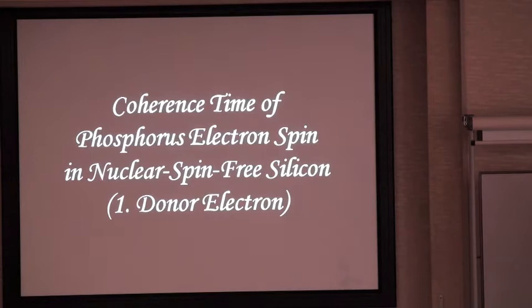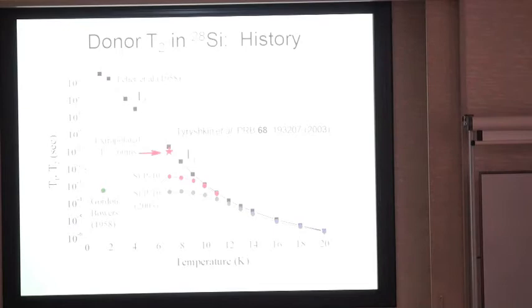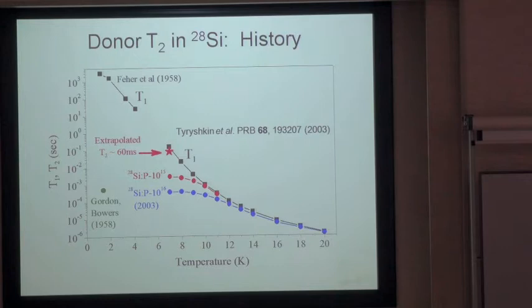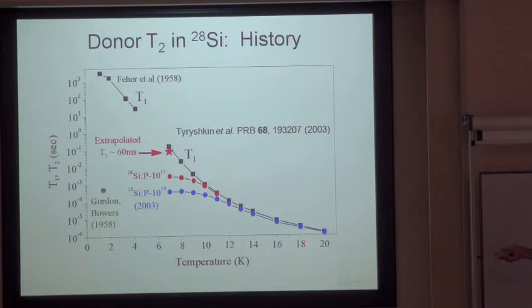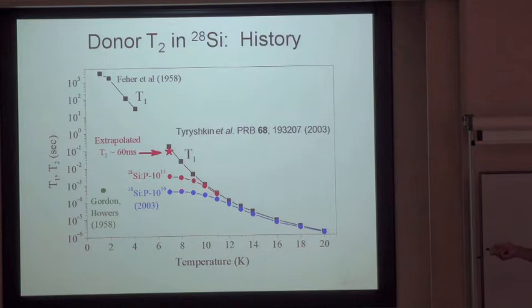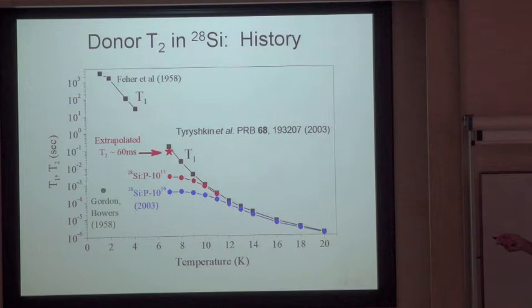The first topic is coherence time of phosphorus electron spins in nuclear spin-free silicon. We are going to eliminate background silicon nuclear spins as much as possible and try to extend the electron spin decoherence time. Previous results from Steve Lyon's group showed that as a function of temperature, T2 coherence time goes up to about a few milliseconds, while T1 can go up to 10^3 seconds.